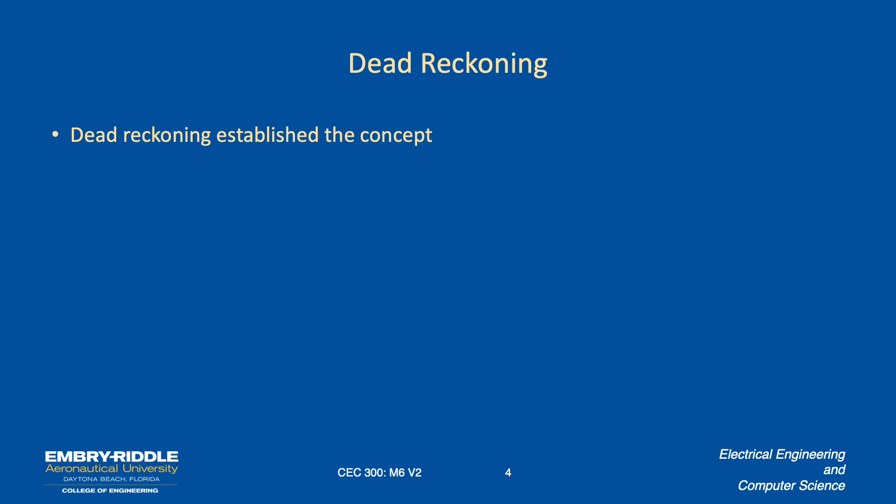Let's review dead reckoning. This is where we got the concept that we could build inertial navigation from. If we know the starting position and the velocity, which is constant over some interval, then the final position ought to be the initial position plus the product of velocity and time.